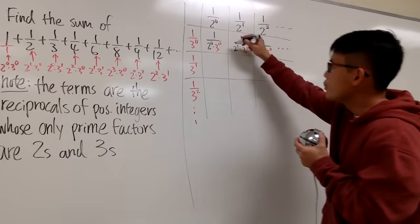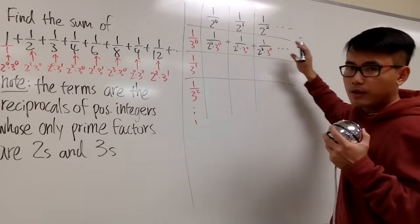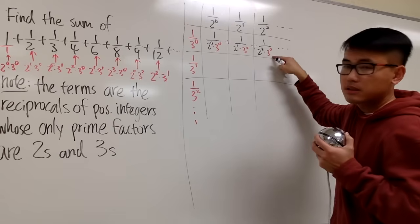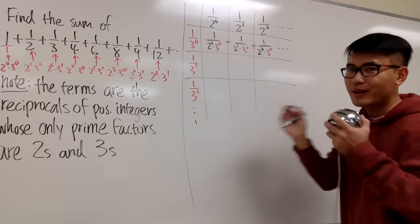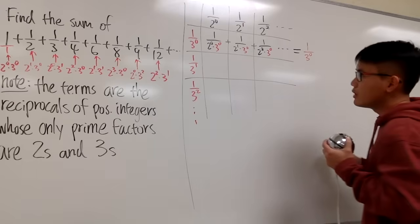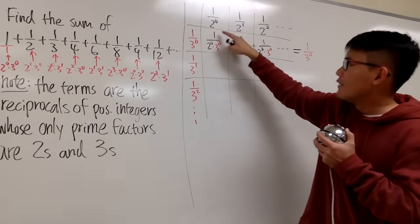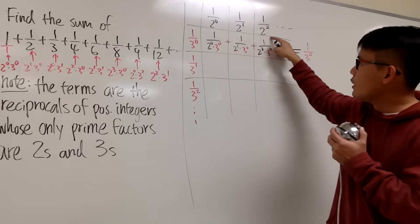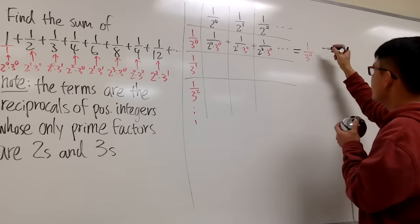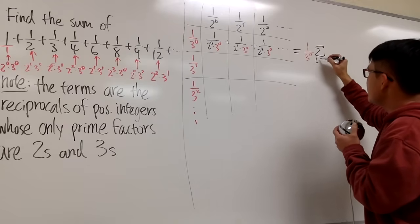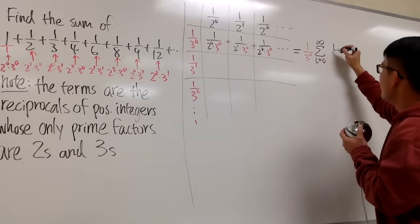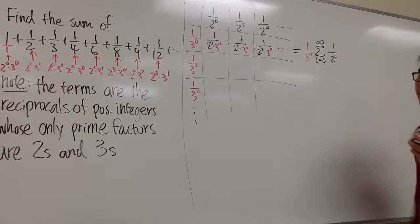I'm going to add up the first row. When I do, I see a common factor of 1 over 3 to the 0. I can factor that out, giving 1 over 3^0 times the sum of 1 over 2^0 plus 1 over 2^1 plus 1 over 2^2, and so on. We can put that into summation form: the sum as i goes from 0 to infinity of 1 over 2 to the i.